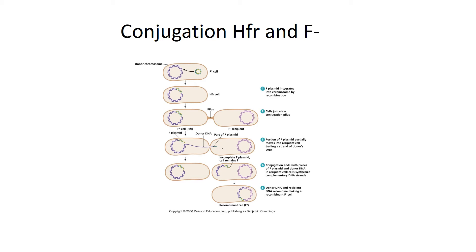Now I'm going to continue with conjugation between an HFR and an F-minus bacterium. Usually we see an F-plus cell with a single circular chromosome and a separate fertility plasmid, but sometimes, for reasons we don't completely understand, the fertility plasmid integrates into the bacterial chromosome, causing what we call an HFR cell.